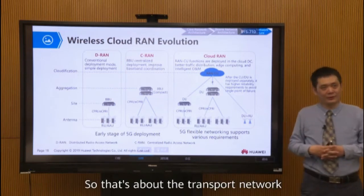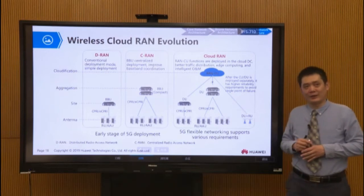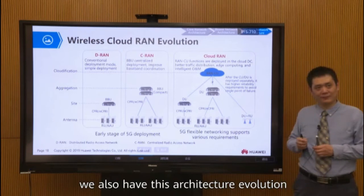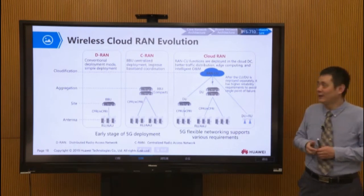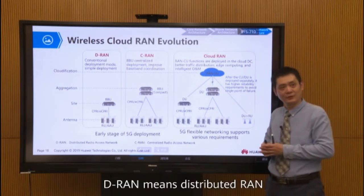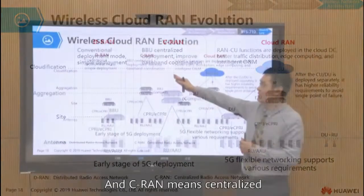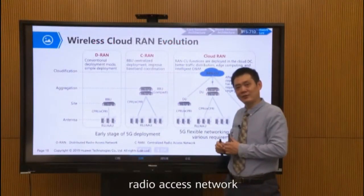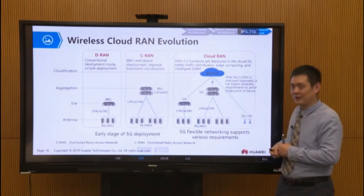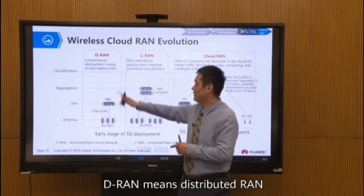For wireless networks, we also have architecture evolution: DRAM, CRAM, and Cloud RAN. DRAM means Distributed RAN, where RAN stands for Radio Access Network. CRAM is the Centralized Radio Access Network, and Cloud RAN involves CU and DU separation. First, let's see what DRAM means — DRAM means Distributed RAN.